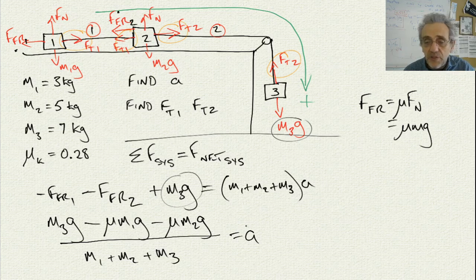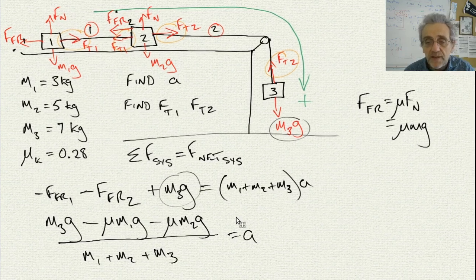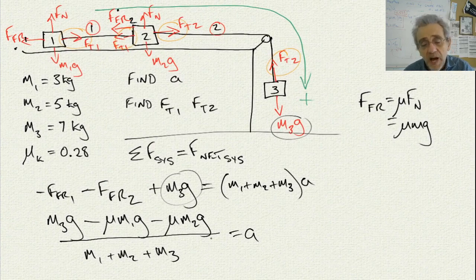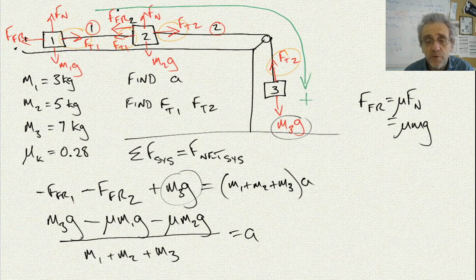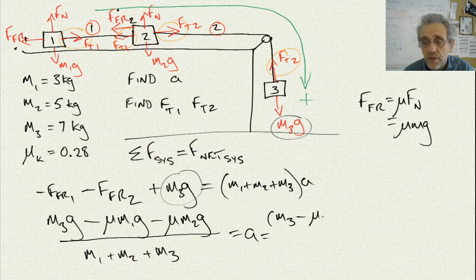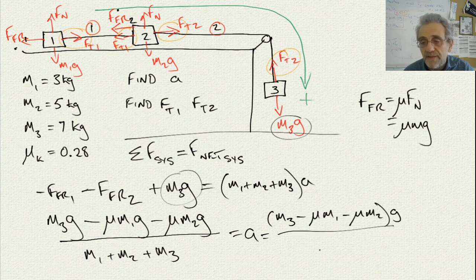Now I can do one more simplification here, and that is, if you'll notice, there is a G term that is common to every term in the numerator. So I can go, bracket, M3 minus mu M1 minus mu M2 times G, all divided by the total mass. And that is my acceleration.